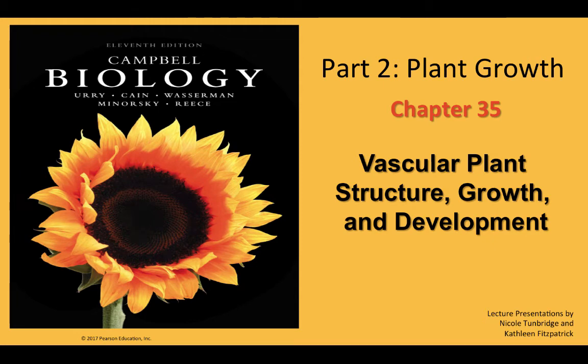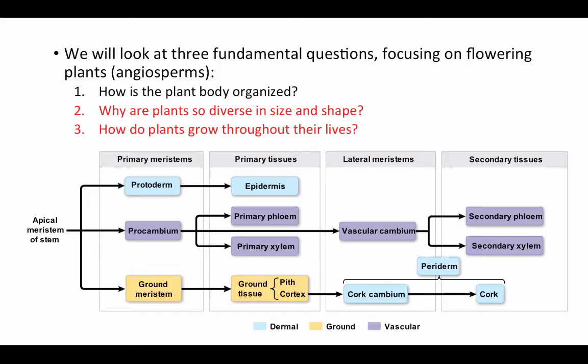Welcome back. Now that we have a good understanding of the hierarchical organization of plant bodies, we're going to take a look at how those bodies are put together — how they grow and develop. We'll revisit questions from the last web lecture about how evolutionary pressures and the different jobs plant parts perform contribute to diversity in size and shape, and what mechanisms allow plants to grow throughout their lives.